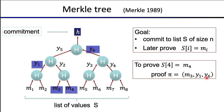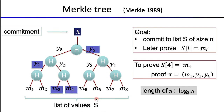More generally, if we had a tree with n leaves, the depth of the tree would be log base 2 of n, so the proof consists of log base 2 of n hashes — which is quite remarkable because it's a really short proof. Think about committing to a million elements: log base 2 of a million is around 20. So the proof for proving that m4 is what it's claimed to be would contain only about 20 hashes.